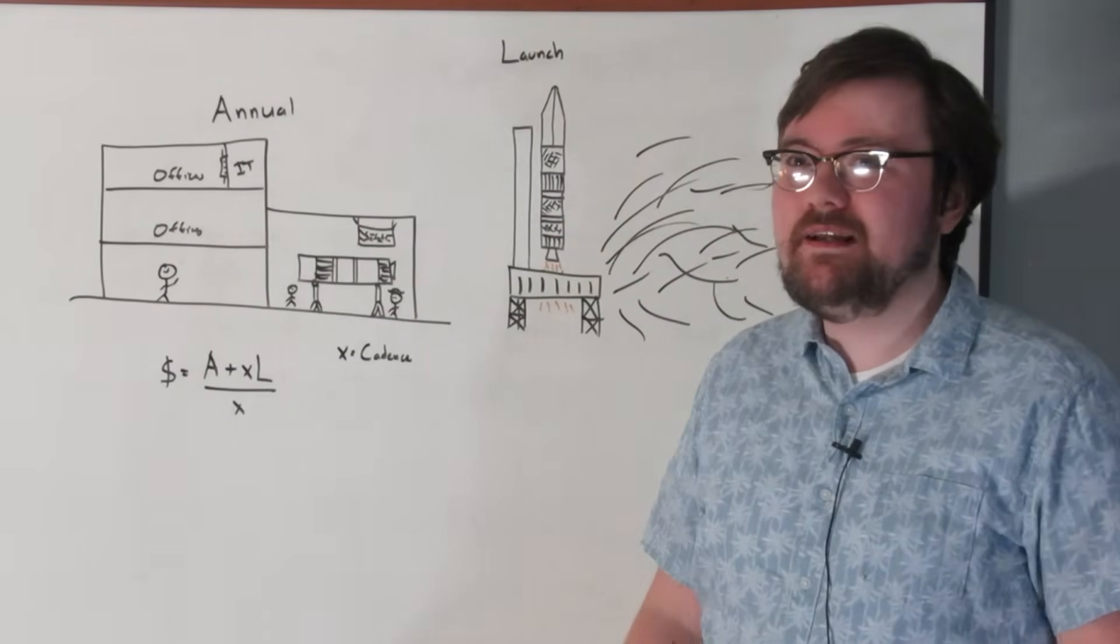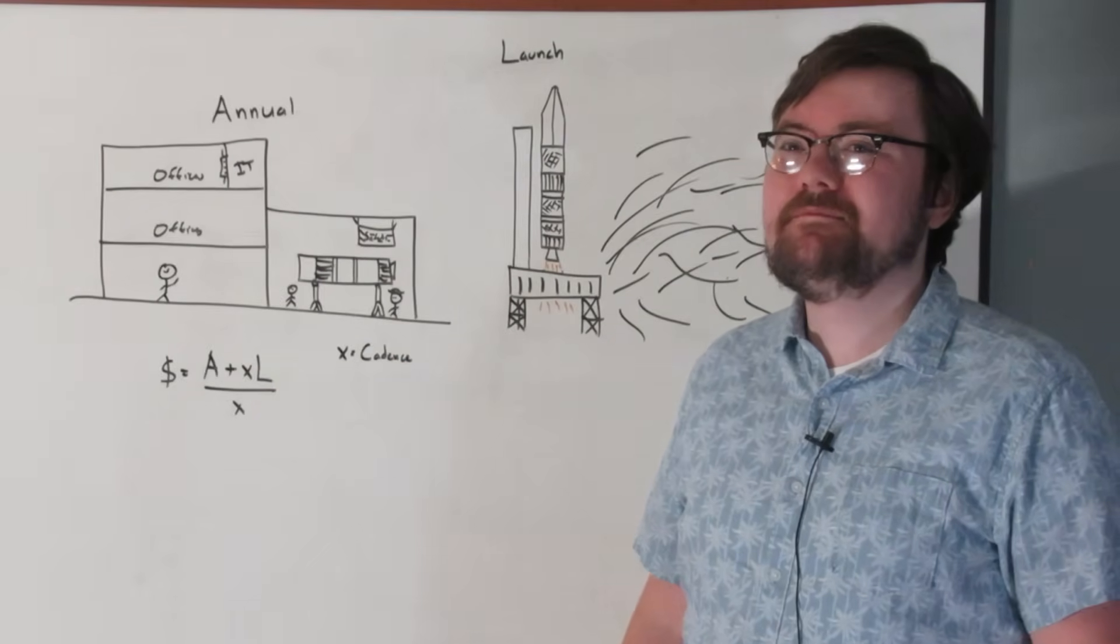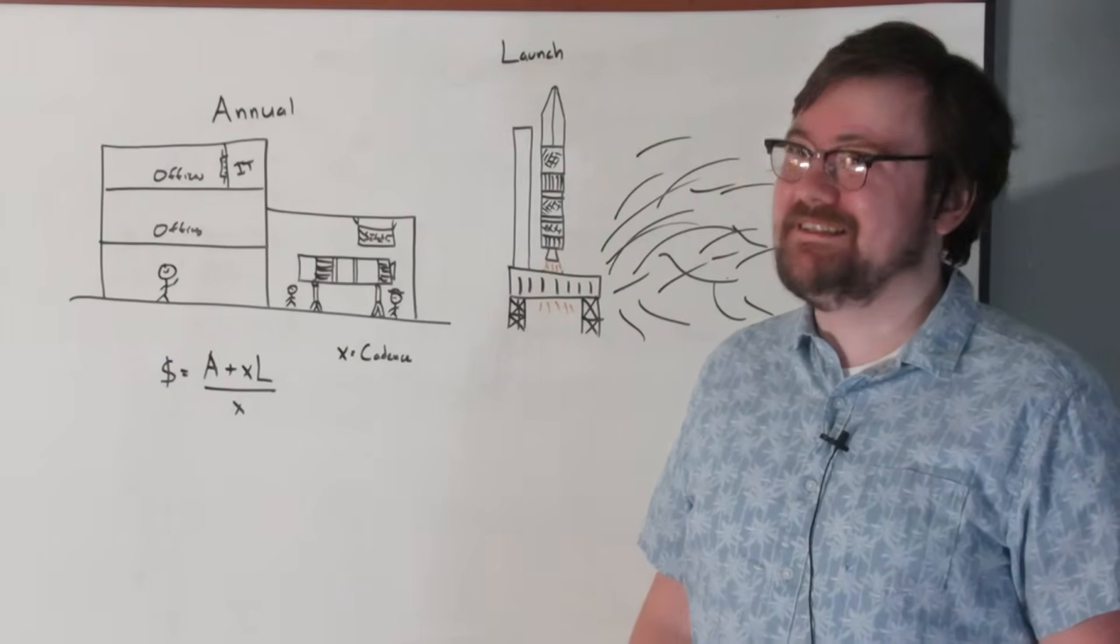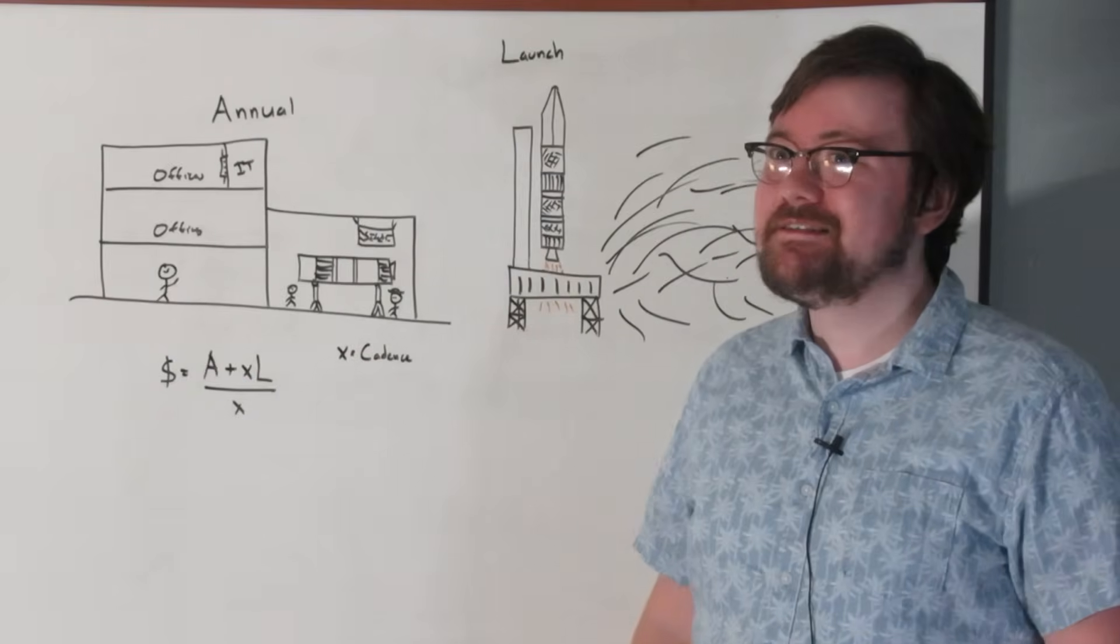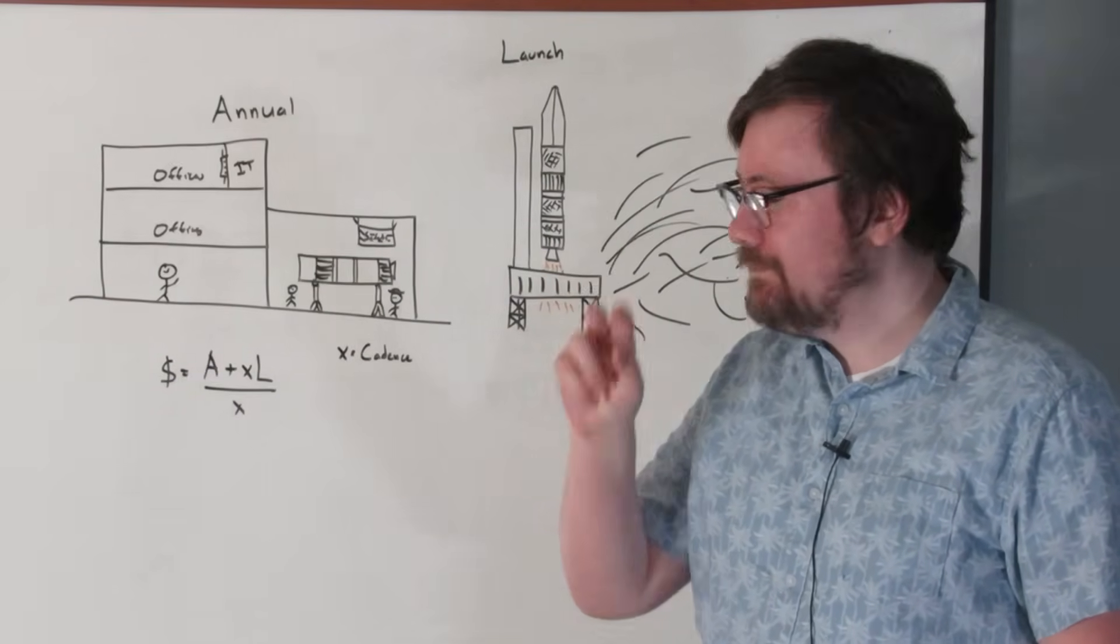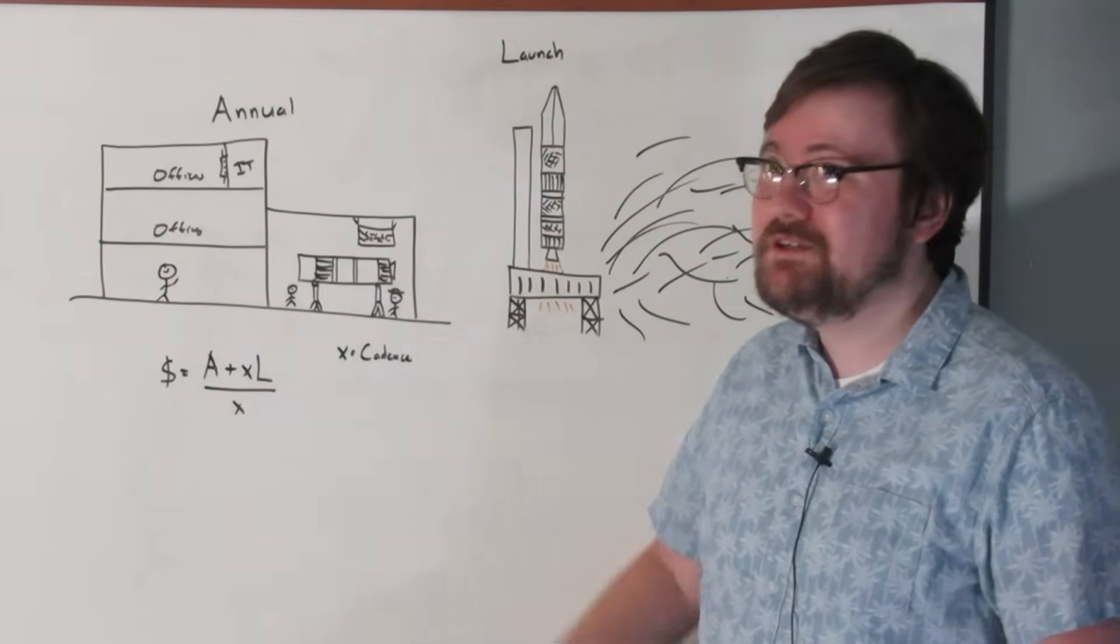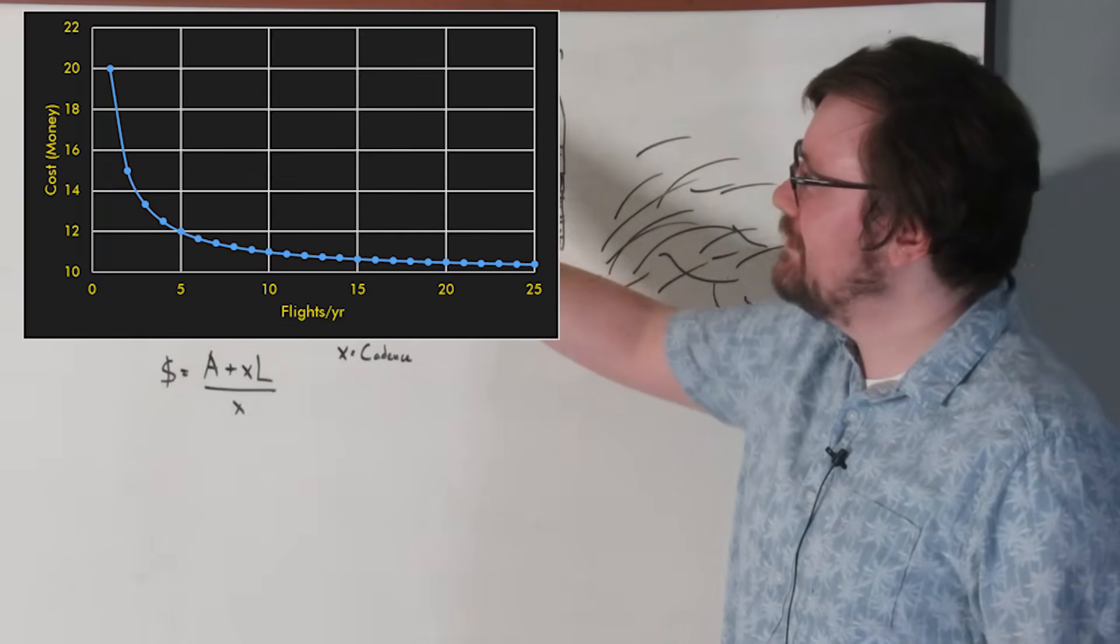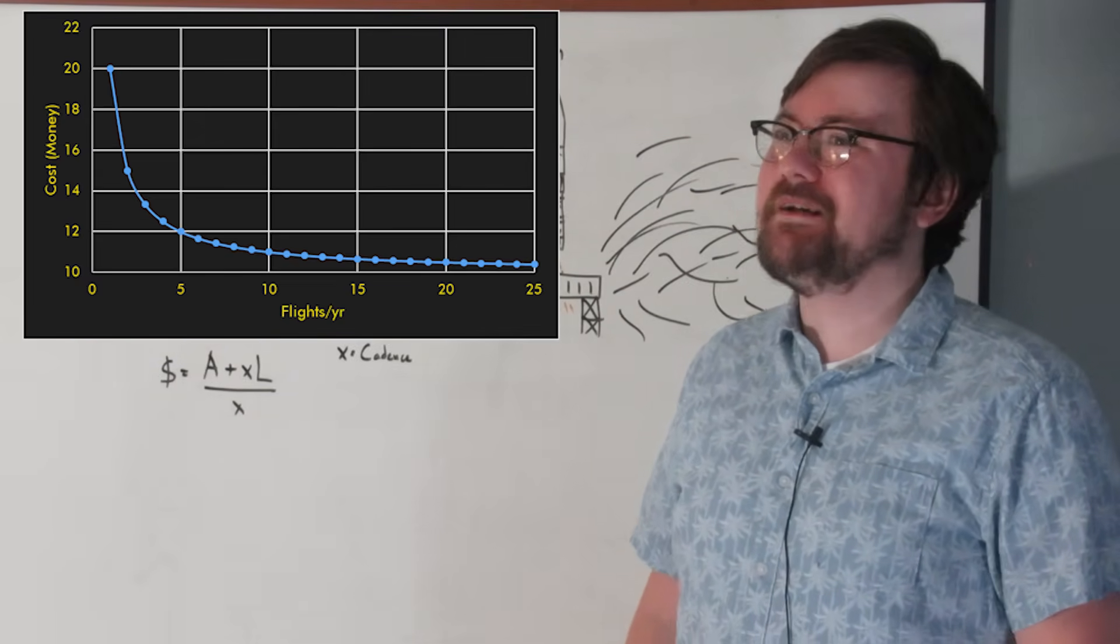That's just the truth. Let's do a quick thing to demonstrate something that's important. Let's say your annual costs are 10, your launch specific costs are 10. If you launch once per year, your rocket costs 20. If you launch twice per year, 10 plus 20, that's 30 divided by 2, is 15. Now I've made a nice little chart here that shows your costs will decrease the more you fly. Cadence is king.